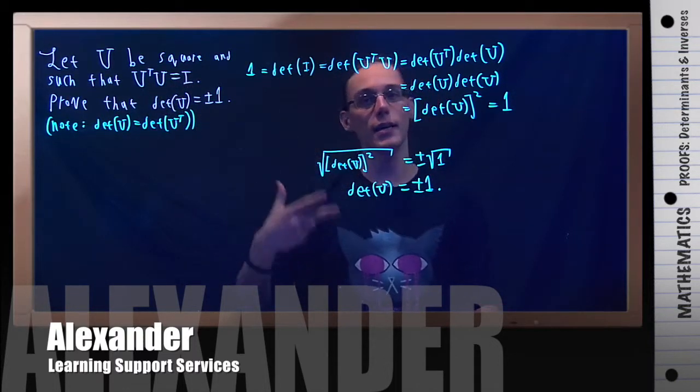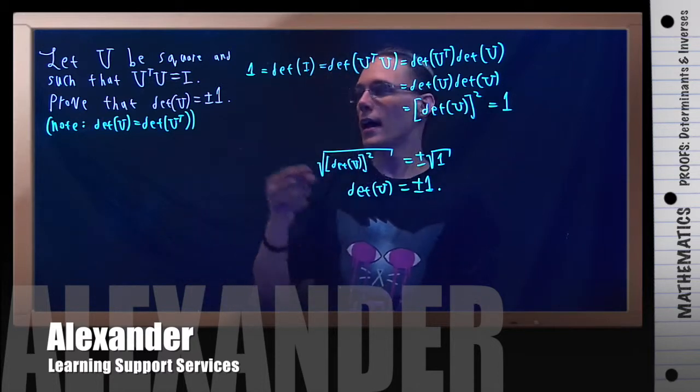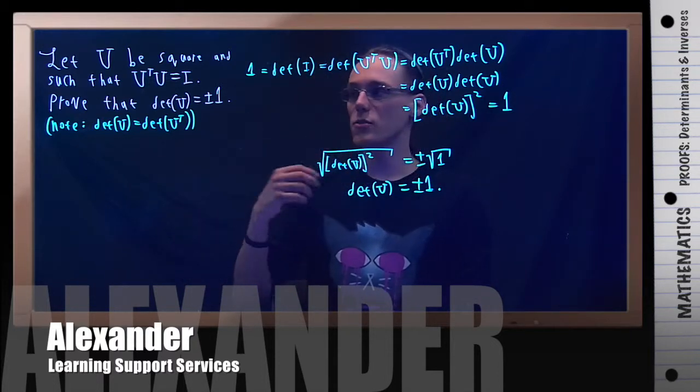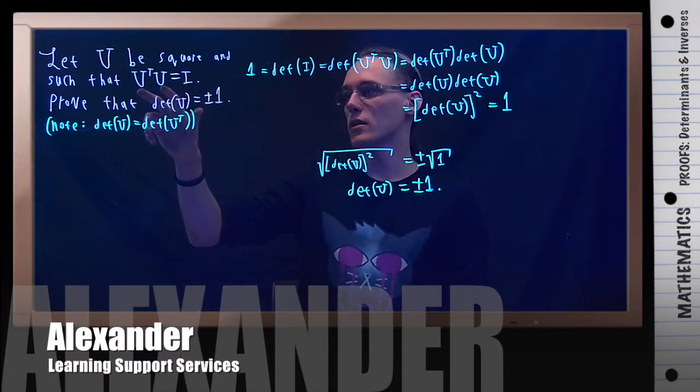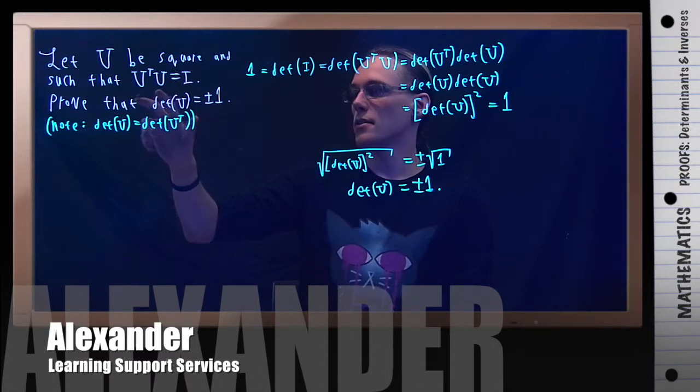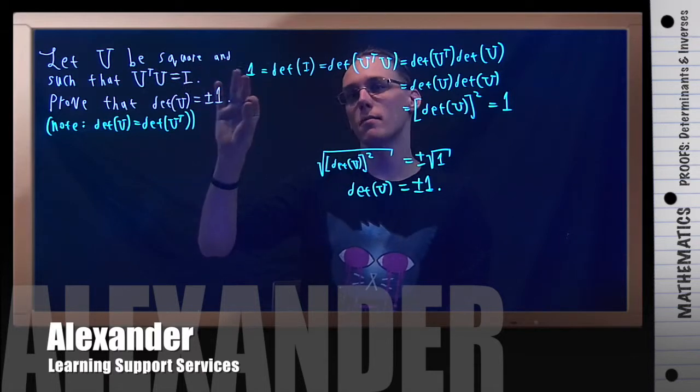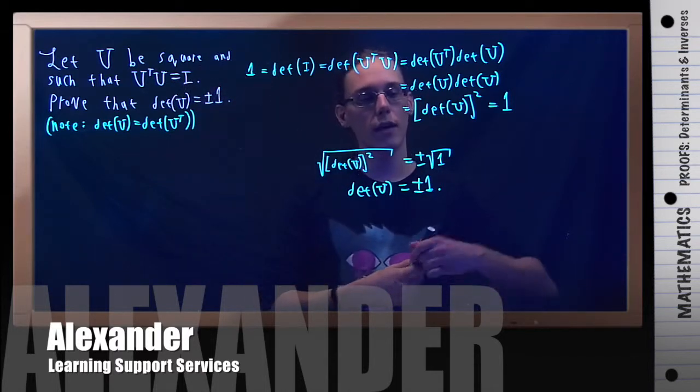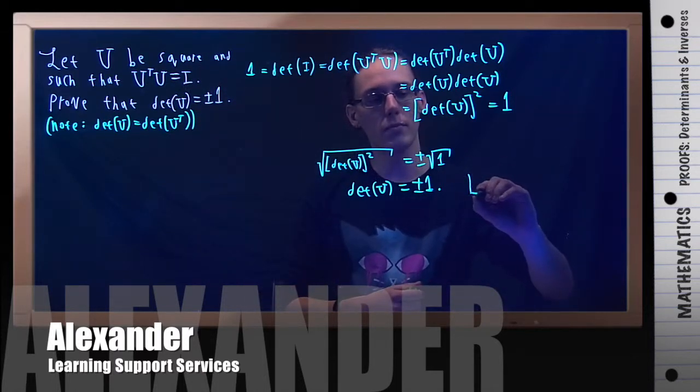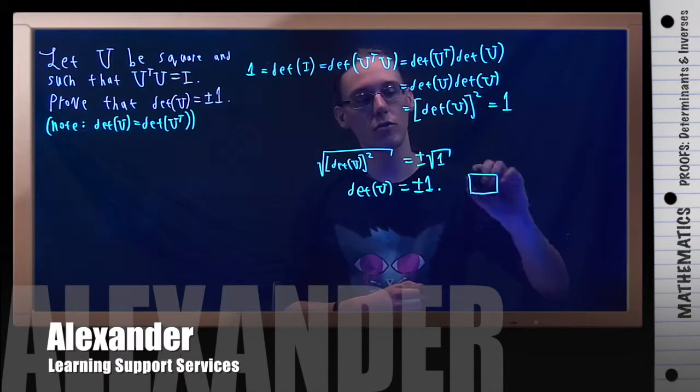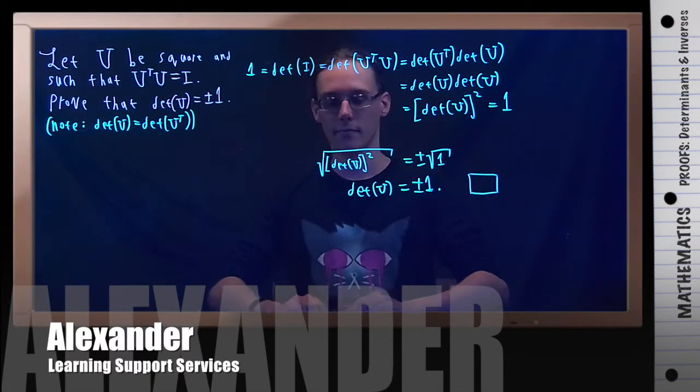If you have a square matrix where the transpose is its own inverse, then the determinant of that matrix will always be either plus or minus 1, which is kind of cool. And this proof has been laid to rest.